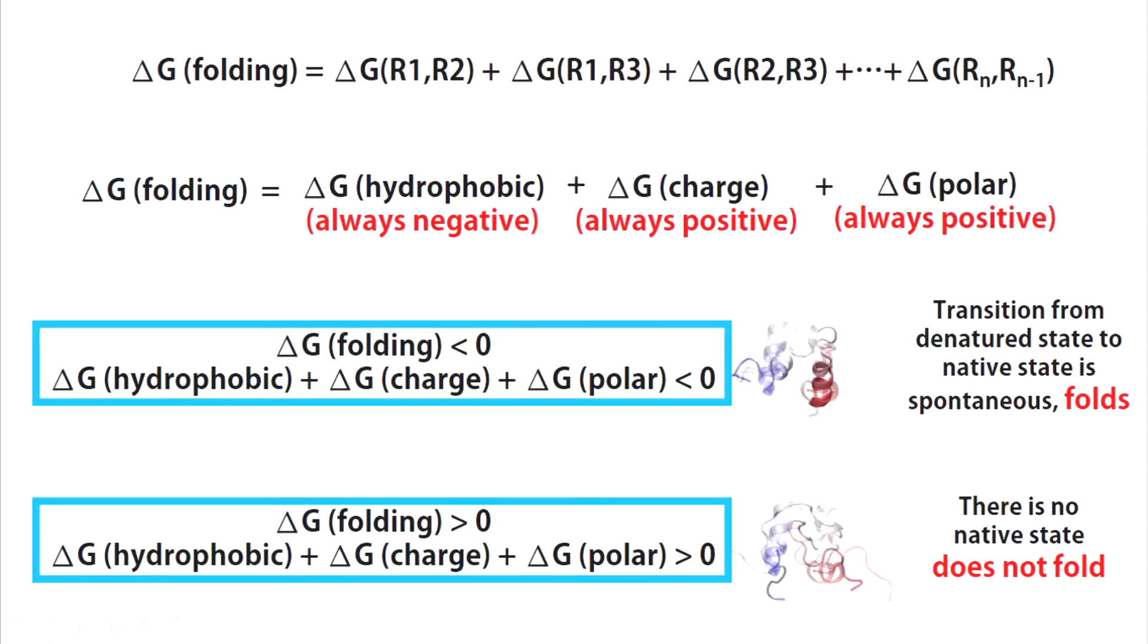In a protein there may be hundreds to thousands of such residue-residue interactions. A protein is able to fold into a specific 3D structure if collectively the favorable contribution of hydrophobic residues can override the unfavorable contributions of charged and polar residues. In this case the polypeptide chain does have a minimum free energy conformation which is also its native conformation. The free energy of transition from unstructured state to this native state is negative, which means folding is spontaneous.